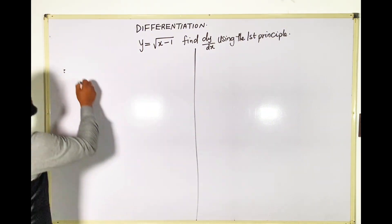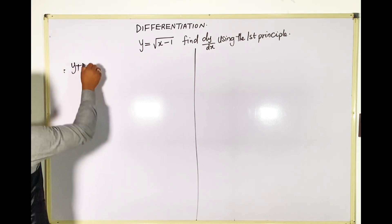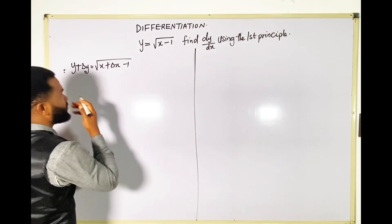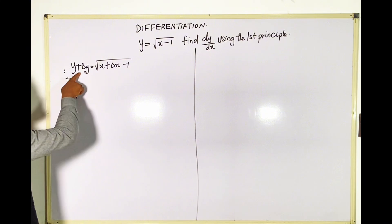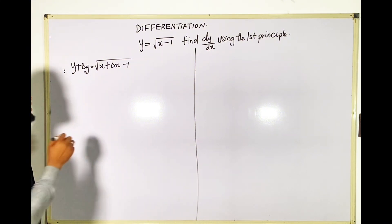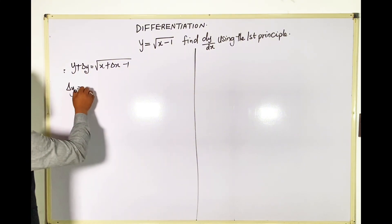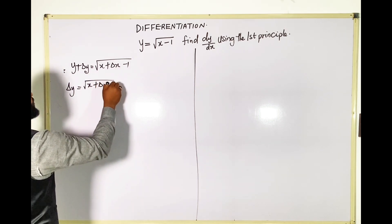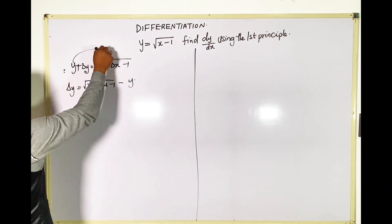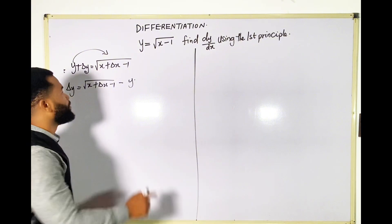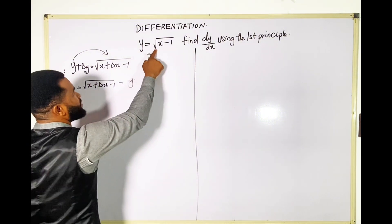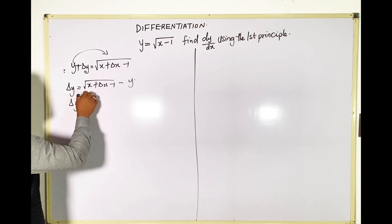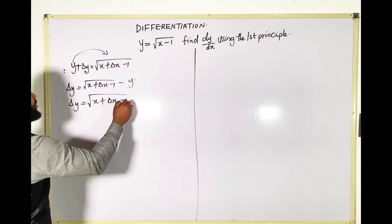I'm going to start by saying y plus Δy is equal to the square root of (x + Δx − 1). I'm going to make y the subject: y is equal to root (x + Δx − 1) minus 1. Remember, taking this to the other side makes it minus. But remember y itself is root (x − 1), so I have Δy equals root (x + Δx − 1) minus root (x − 1).